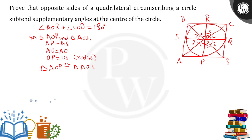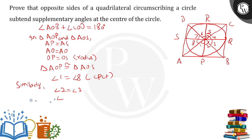Once we have this congruency, we can prove that angle 1 equals angle 8, by CPCT — corresponding parts of congruent triangles. Similarly, repeating the same for triangle POB and BOQ gives angle 2 equals angle 3. For triangle COQ and COR, angle 4 equals angle 5. And finally, angle 6 equals angle 7.